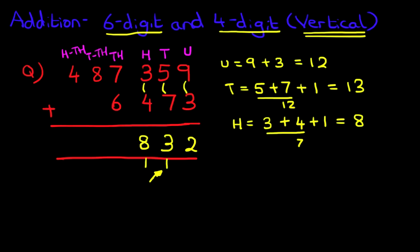The next column is the thousands. We've got seven plus six. So what is seven plus six? It is thirteen. So let's write that down: one here and three over here.